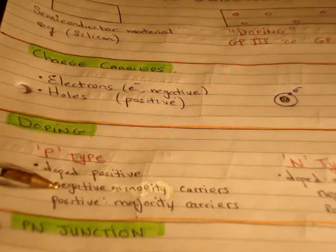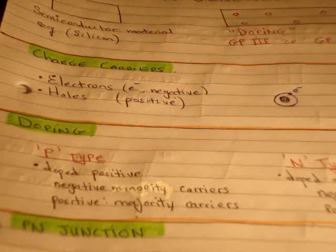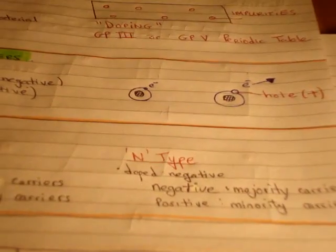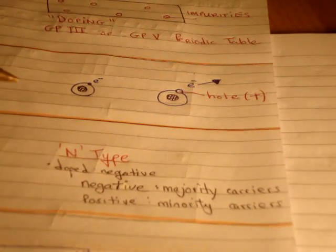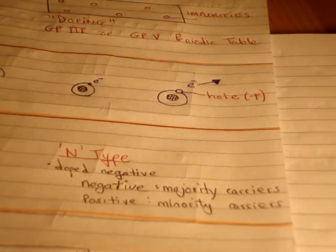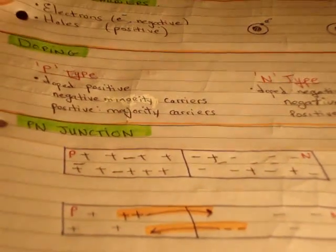In p-type, the majority carriers are positive or holes, and the negative are minority carriers. For n-type, it's the exact opposite, where you have negative charge as the majority carriers and positive charge as the minority carriers. So if you have an n-type semiconductor, most of the conduction is going to be done by electrons. And if you have p-type, most of the conduction is going to be done by holes. So why is this doping process useful?